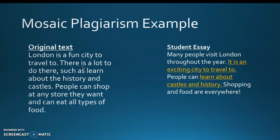Mosaic plagiarism may not happen intentionally. It may be very unintentional, because if students are learning to do research for the first time and starting to write their own work while using sources for a research paper, mosaic plagiarism may very well accidentally happen. That's why in this class, when we work with research papers, we really focus on how to correctly cite information and use APA in-text citations to give credit to a source to avoid incidents like this.